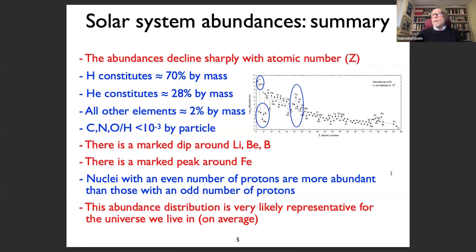There are a few other things to notice. There is a marked dip in abundance around lithium, beryllium, and boron — we'll come to that later. There is also a marked peak around iron, which we'll also address. There is a zigzag pattern in the abundance curve, meaning nuclei with an even number of protons are more abundant than those with an odd number. This abundance distribution is very likely representative of the universe as a whole, though there may be local deviations.